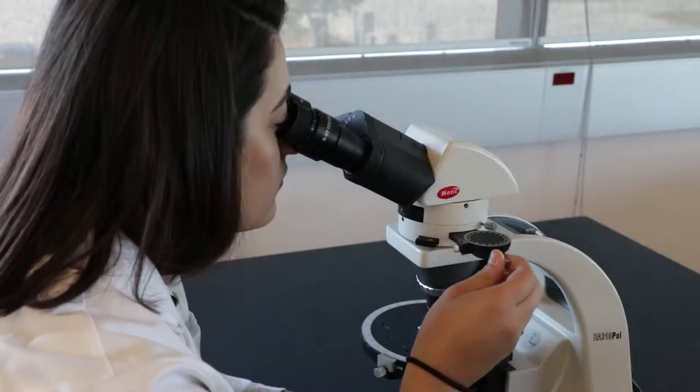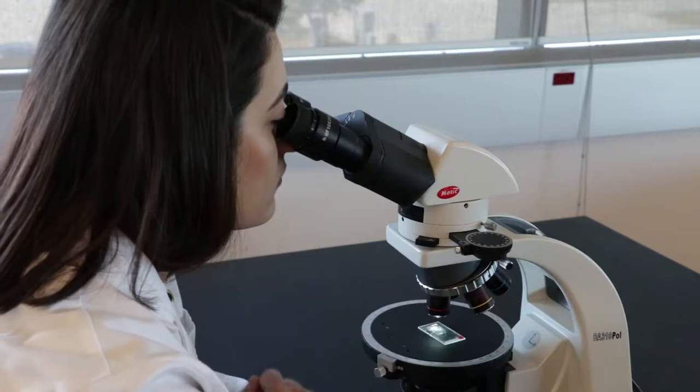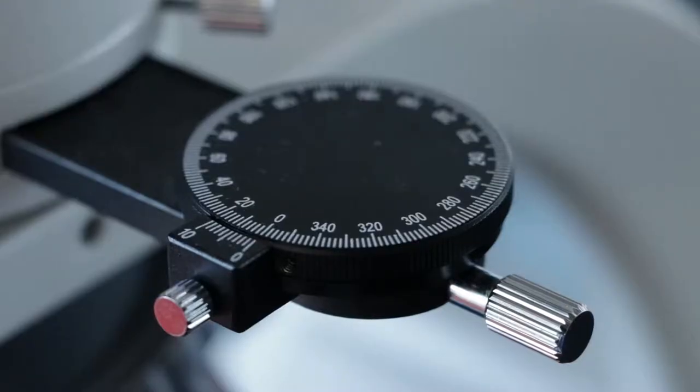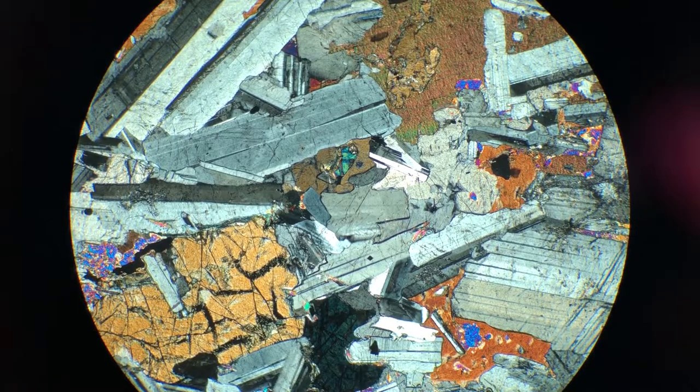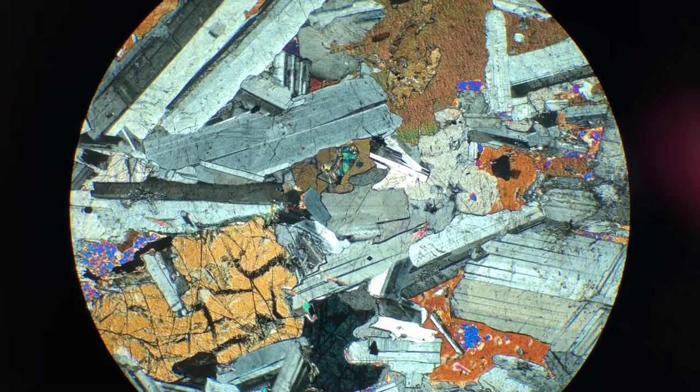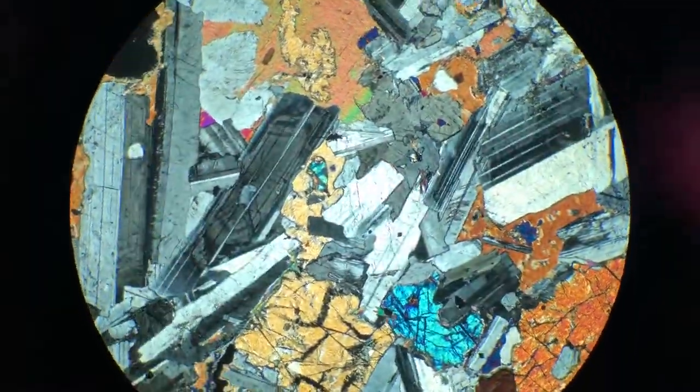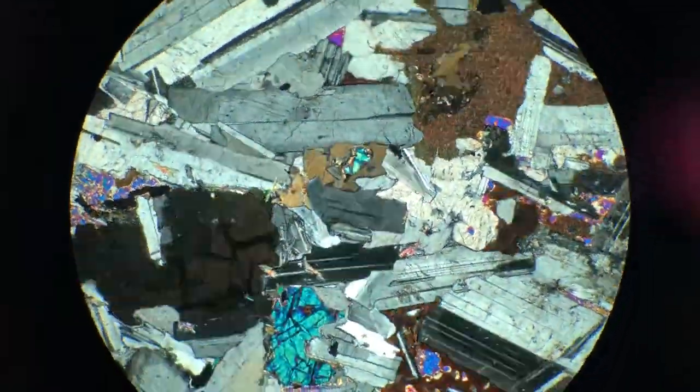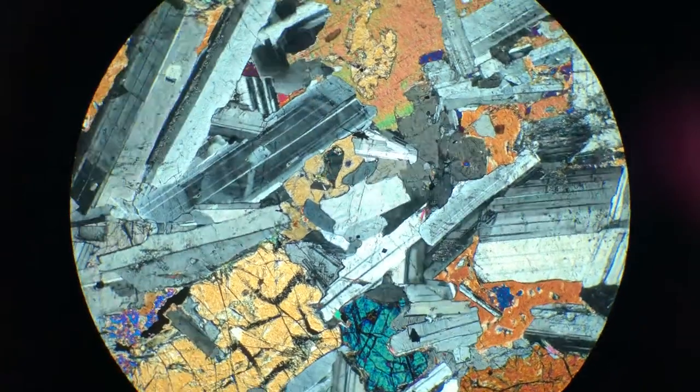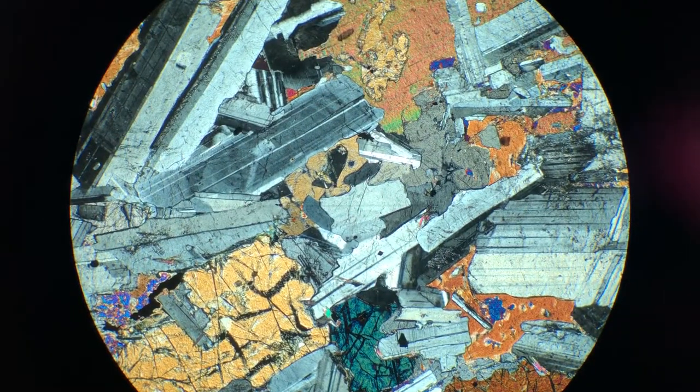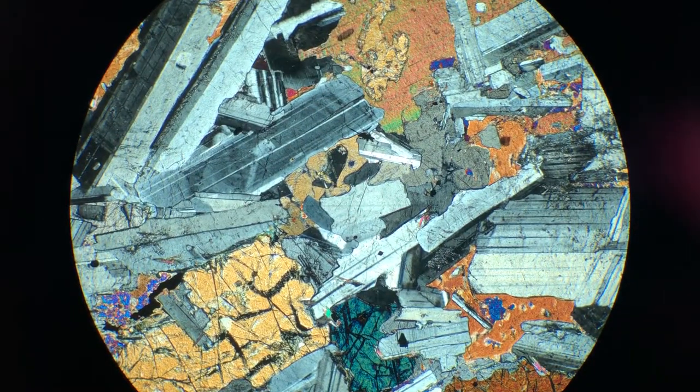Another potential cause for incorrect interference colors is if the analyzer is not in the correct orientation, east to west. Here, you see the correct XPL view of an igneous rock which consists mostly of plagioclase feldspar, showing usually light to dark gray interference colors similar to quartz. They have a rectangular shape with a striped pattern in XPL due to the occurrence of twinning lamellae.